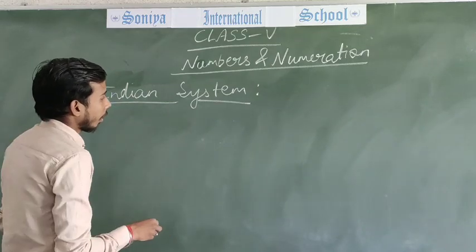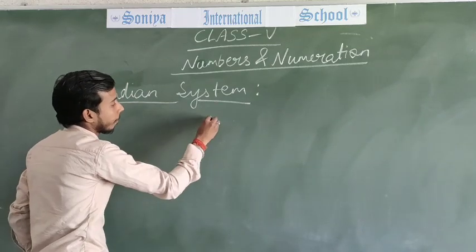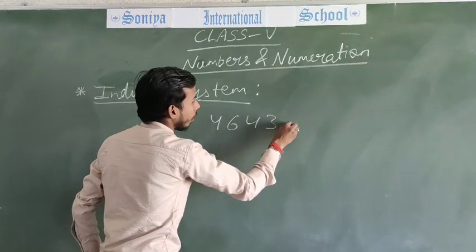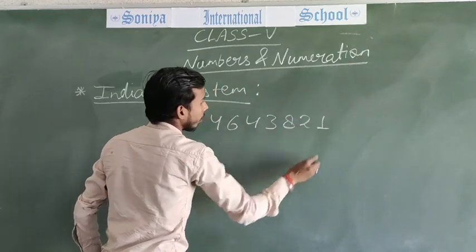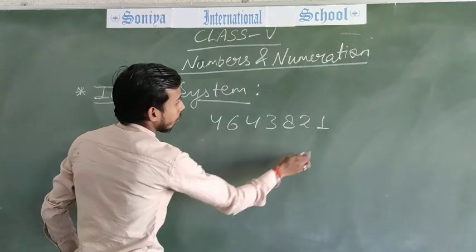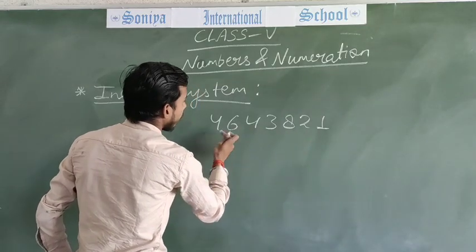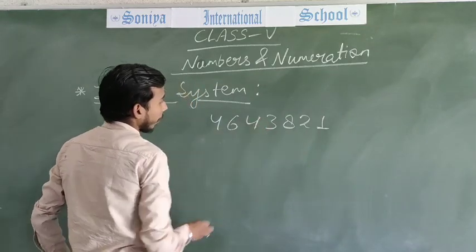Suppose I am taking a number: 4, 6, 4, 3, 8, 2, 1. How many digits? 1, 2, 3, 4, 5, 6, 7. I am taking a 7-digit number.